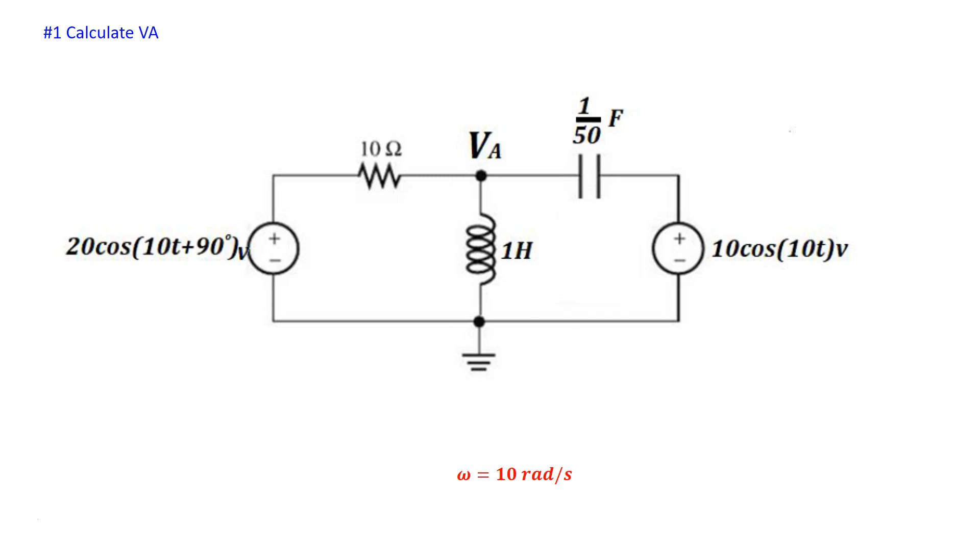Now that we recognize that all supplies in the circuit are running at the same frequency, we can actually use the concept of phasors to simplify the trigonometric manipulations we would have had to do. So instead of doing things in the sine cosine domain or the trig domain, let's convert these voltage sources to their phasor equivalent.